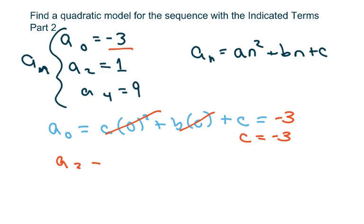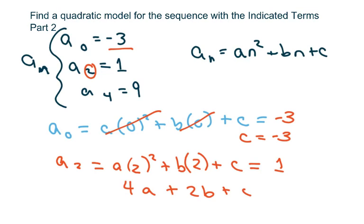Now, a sub 2 equals 1. So we're going to put in, sorry, everywhere there's an n I'm putting in 2 because we're doing 2 here. So what you're going to get is 4a plus 2b plus c equals 1. Now, we know c is negative 3.